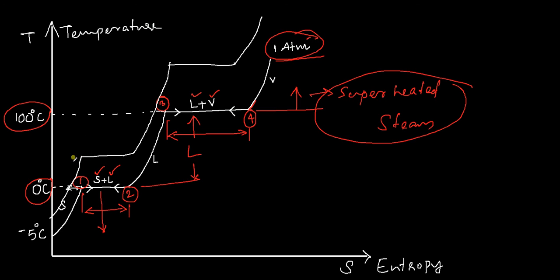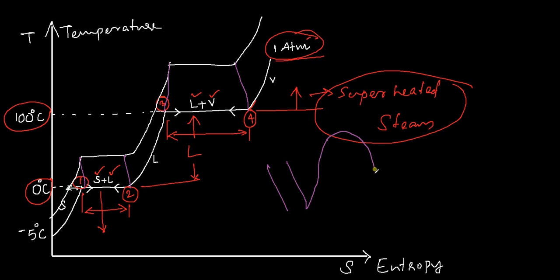Now, if you join these saturation points, you can draw a line which will eventually form the graph that we intend to create at the end of this video. For example, if you join all the points at 1, then join the 2s, then the 3s, then the 4s, you will be able to create a graph — which is the temperature-entropy diagram of water.